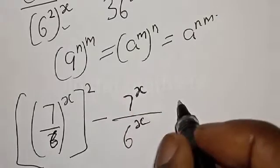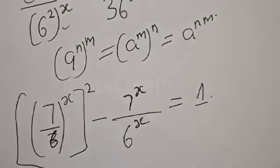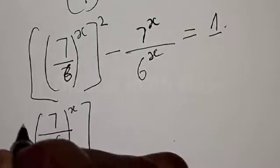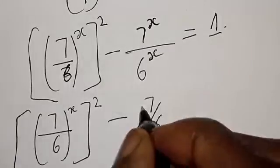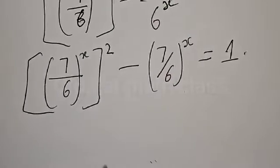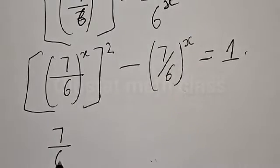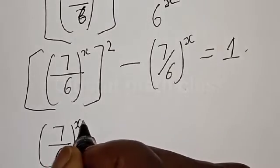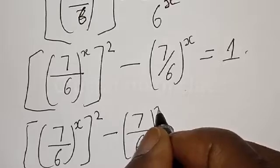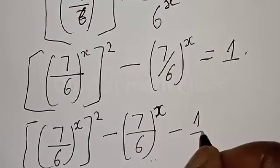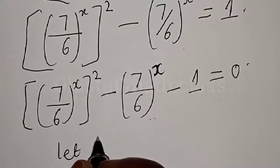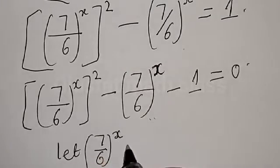Now we have 7 divided by 6, all raised to power s, all squared, minus 7 divided by 6, all raised to power s, is equal to 1. Then this can be expressed as 7 divided by 6, all raised to power s, all squared, minus 7 divided by 6, all raised to power s, minus 1 is equal to zero. Now let's let 7 divided by 6, raised to power s, equal to t.